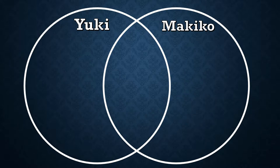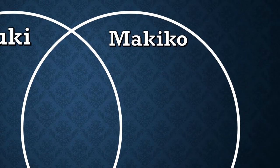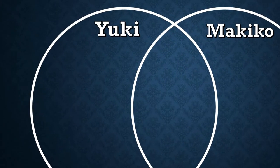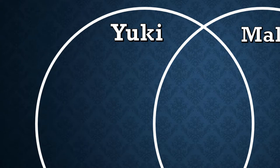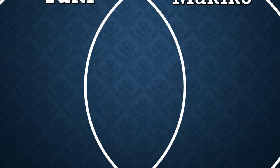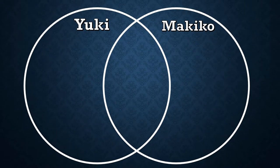The way that we complete a Venn Diagram is as follows. On the right side, where it says Makiko, we are going to write the things that make Makiko different from Yuki. On the left side, we are going to write the things that make Yuki different from Makiko. In the middle, we are going to write what things they have in common, or what things make them the same.